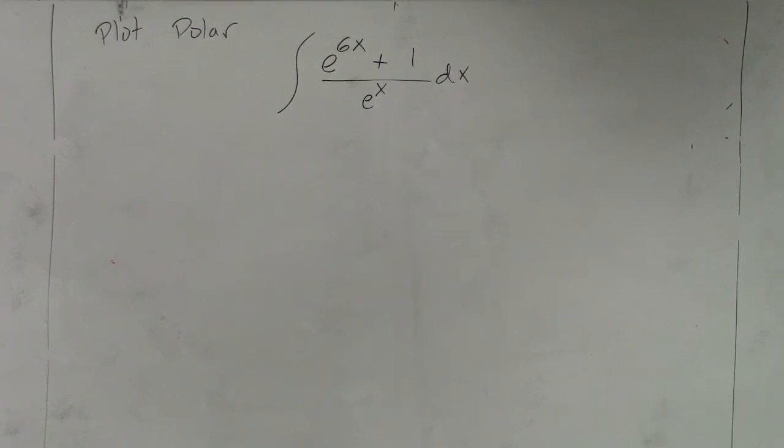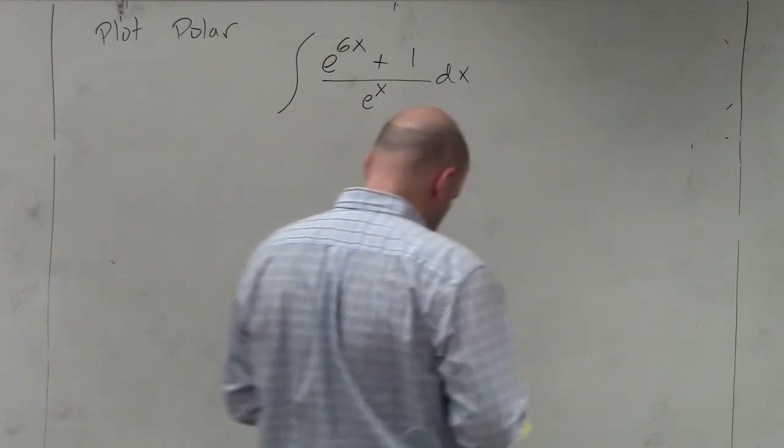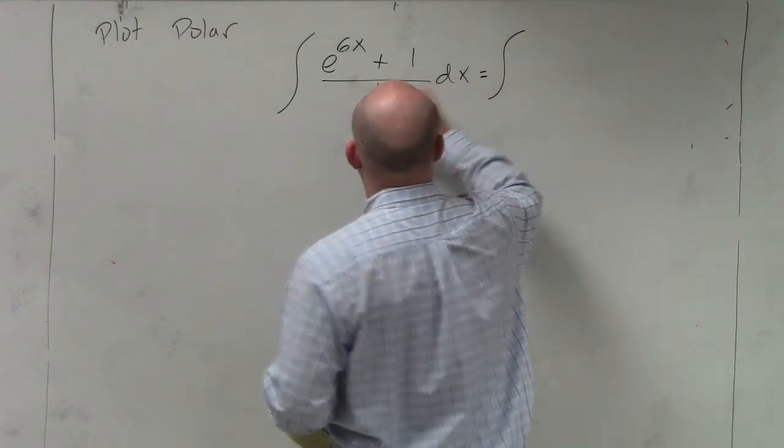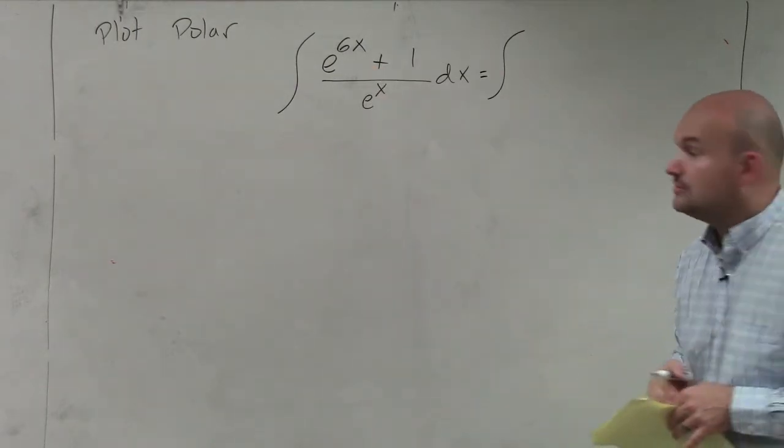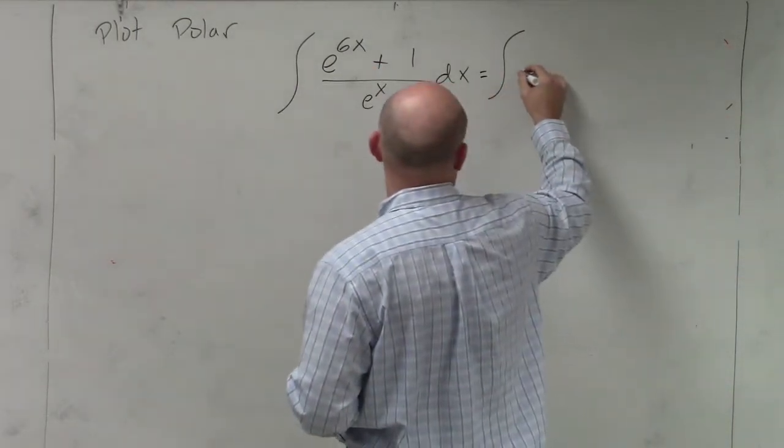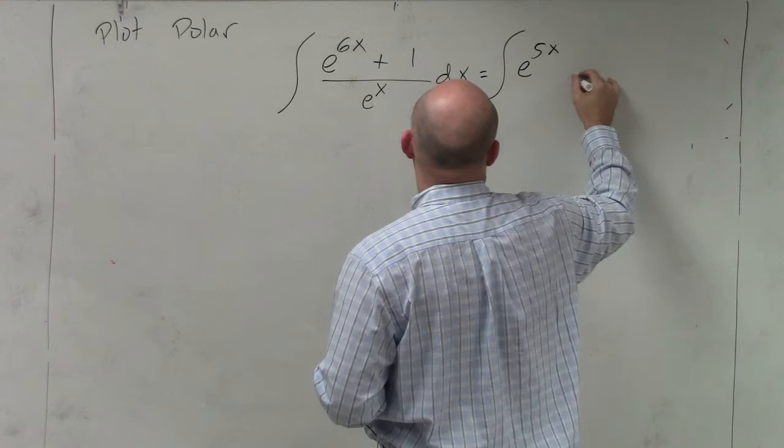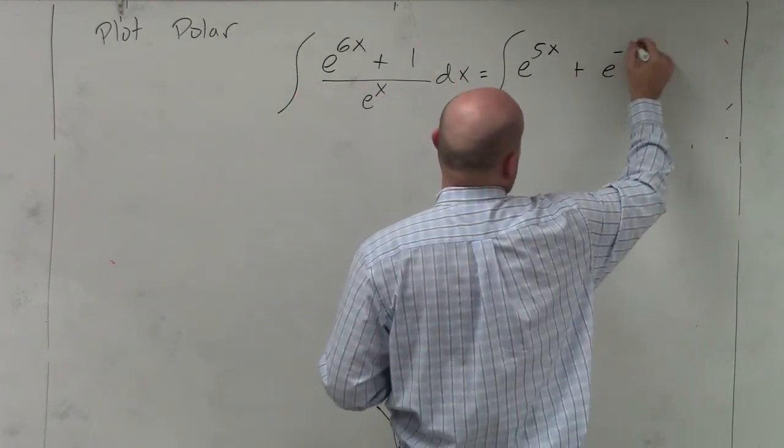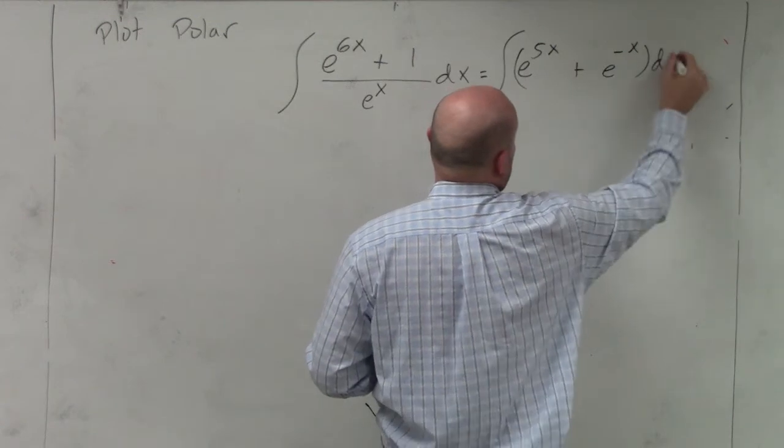expression in the denominator really works. So one thing that I do notice is I can rewrite this. I can divide that e^x into the e^6, so I get e^(5x). And then plus I can divide this over, so that's going to be e^(-x)dx.